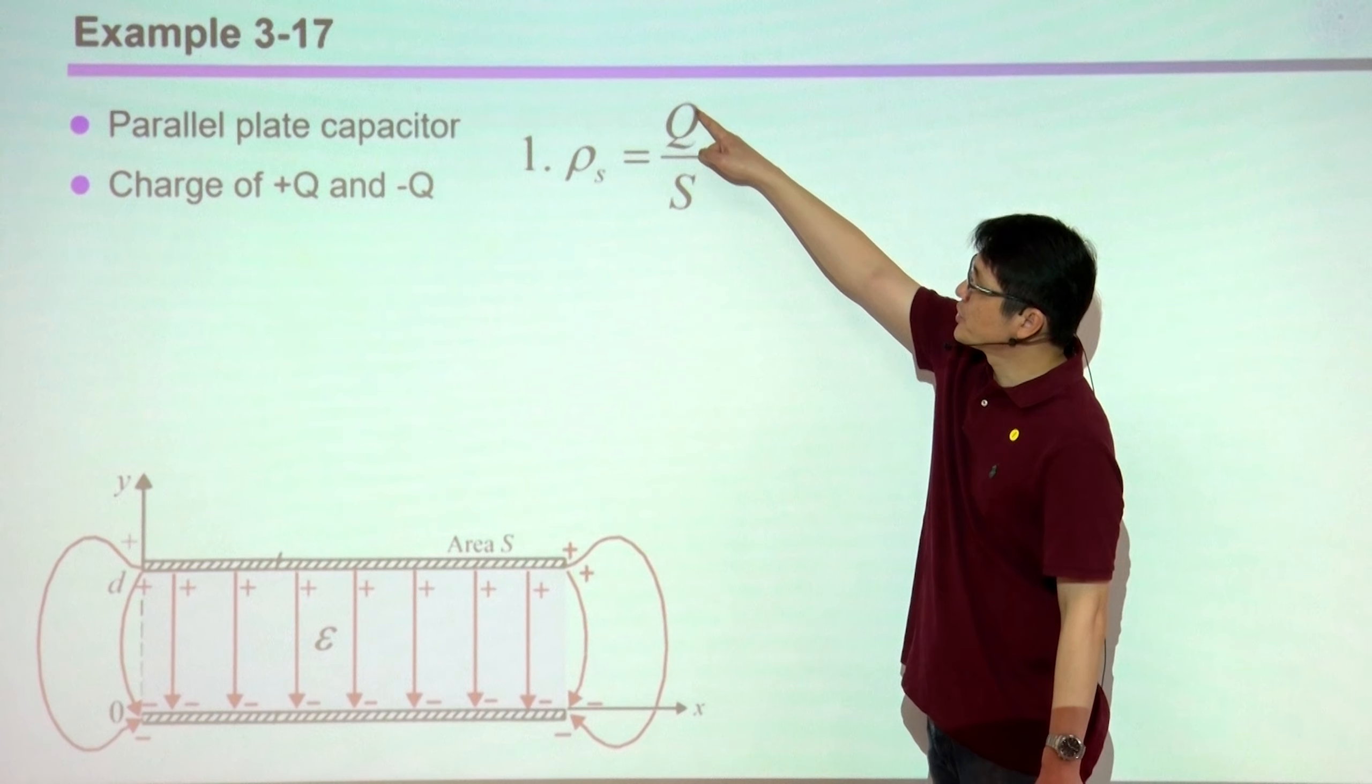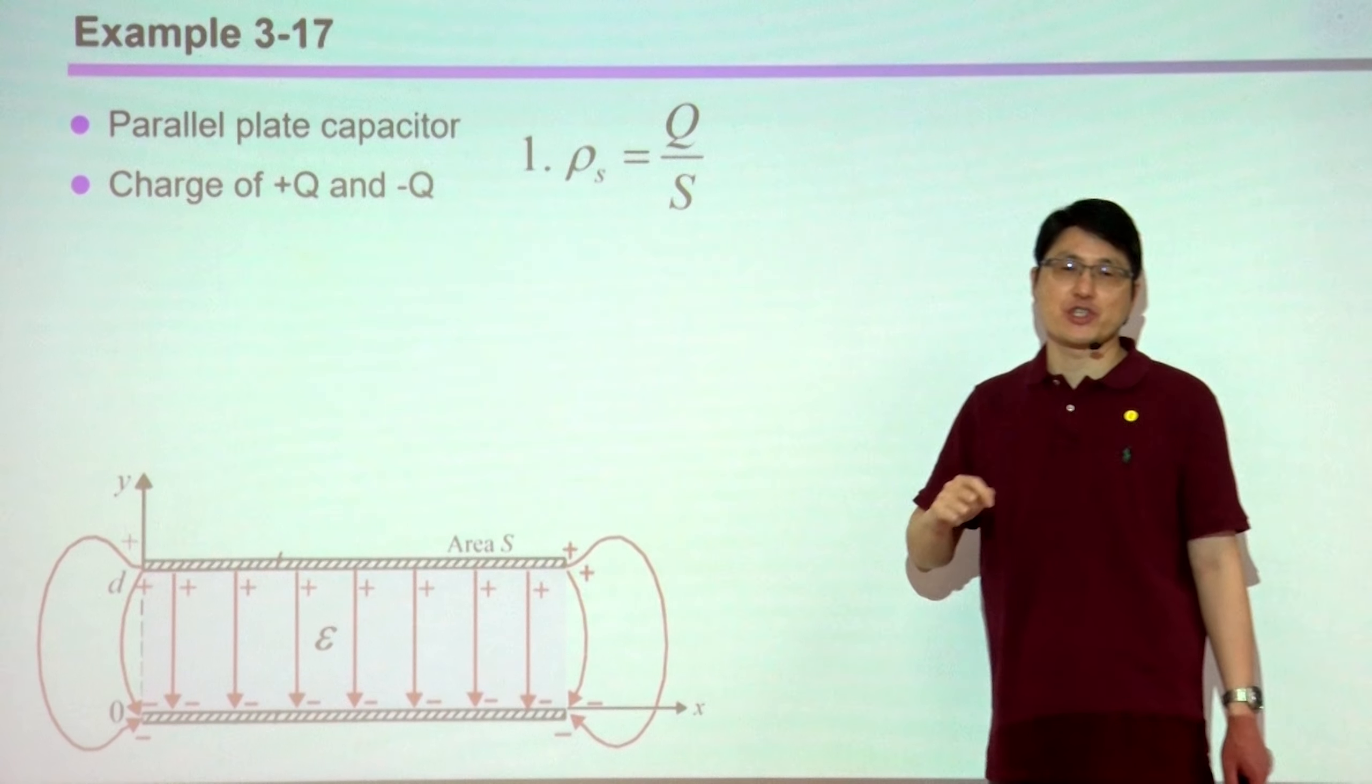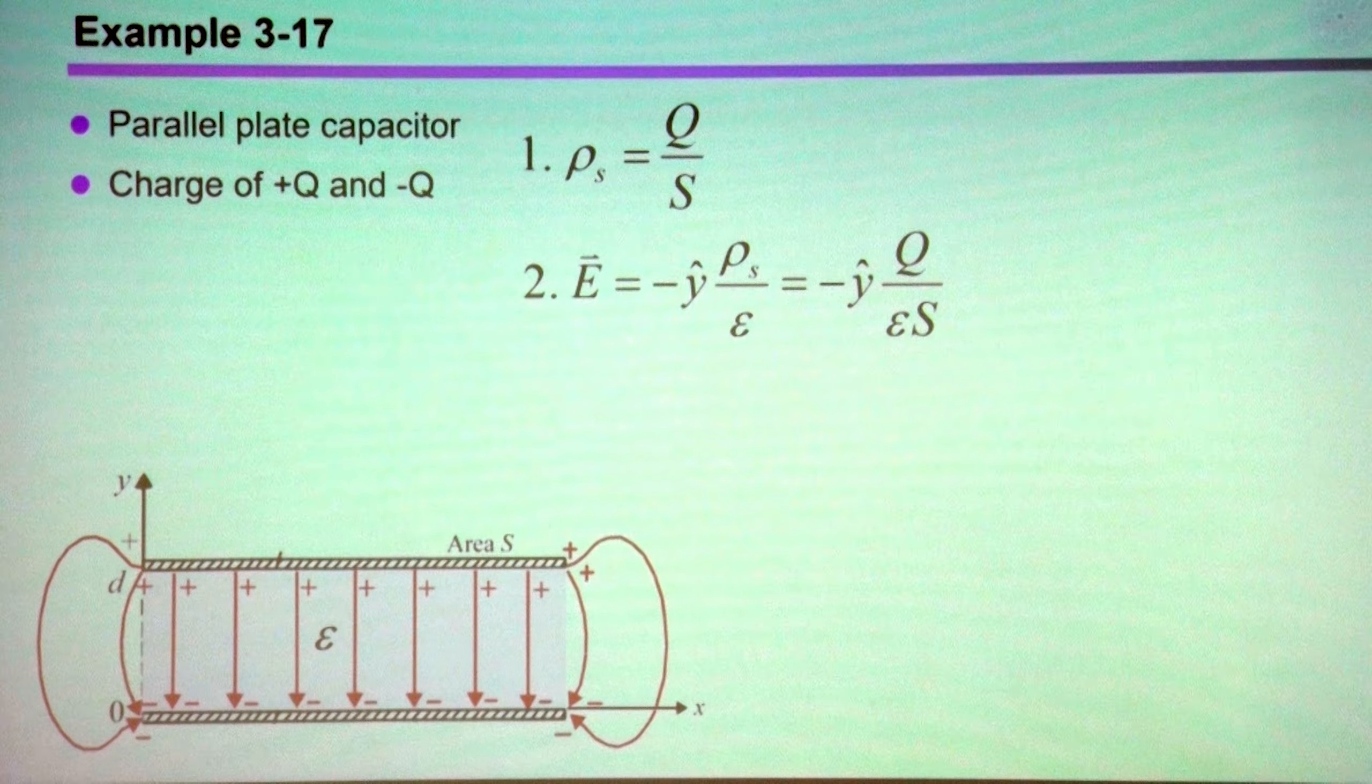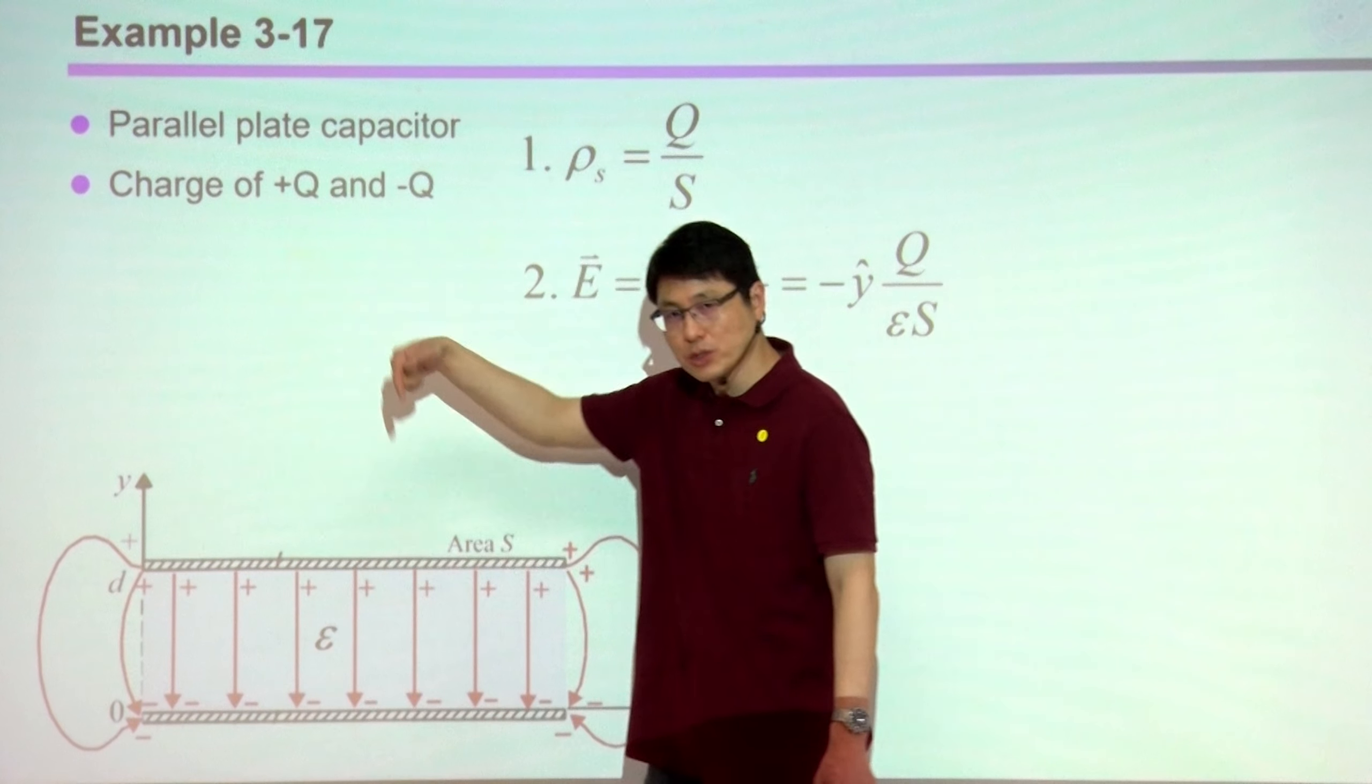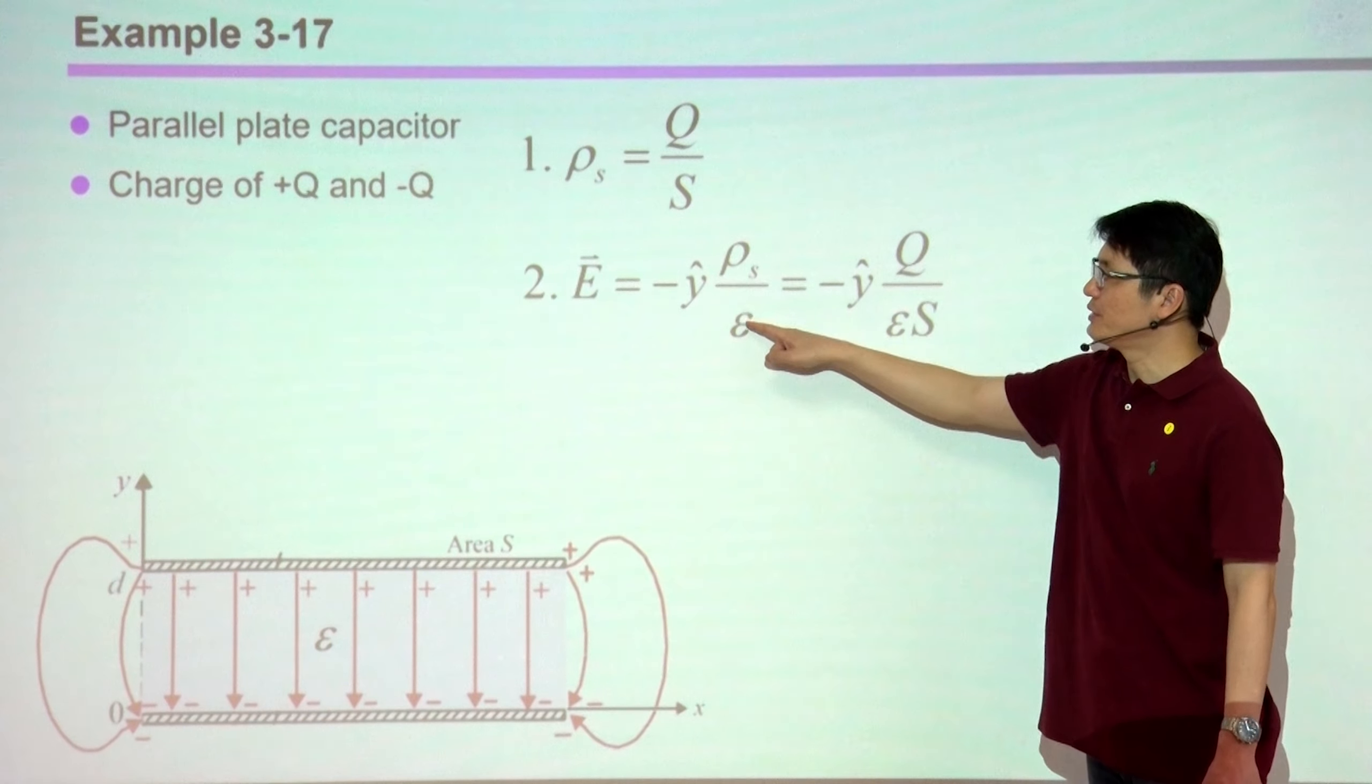If we deposit charge Q on the top and negative Q on the bottom, and we know the plate surface area, so we know the surface charge density is Q divided by S. We assume that we deposited those charges. In the previous case, we already know that the E fields, in this case, is pointing downwards. Fields emit from the positive charge and ends up at the negative charge. The direction is in the negative Y direction, and the amplitude is ρ divided by ε. This is something we derived already.